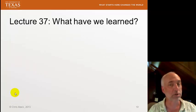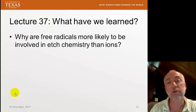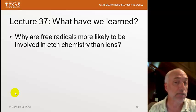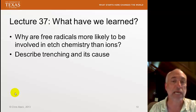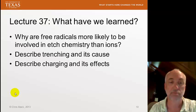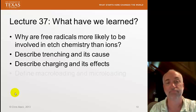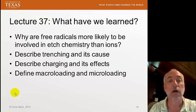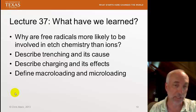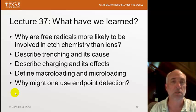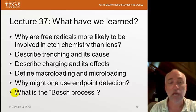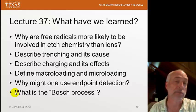Let's review what we've learned in this lecture on etch: Why are free radicals more likely to be involved in etch chemistry than ions? Describe trenching and its cause. Describe charging and its effects. Define macro-loading and micro-loading. Why might we use endpoint detection? And what is the Bosch process — how does it work, and what is it used for?